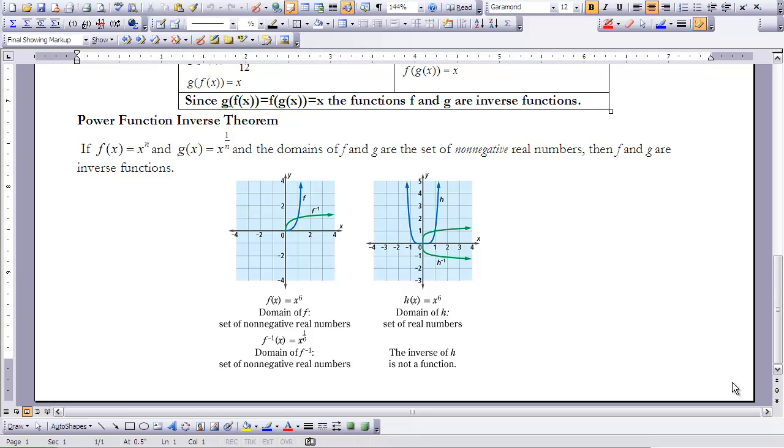In earlier lessons, you worked with the functions with equations y = x^n, taking the nth power, and y = x^(1/n), taking the nth root. For all x values greater than or equal to 0, it is reasonably easy to show that these functions are inverse functions.